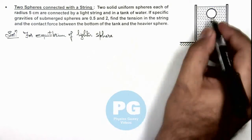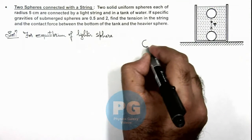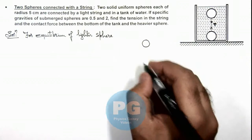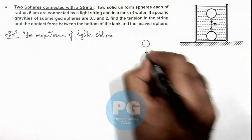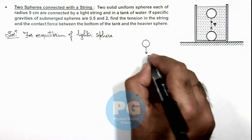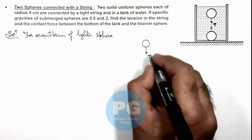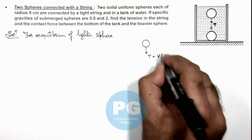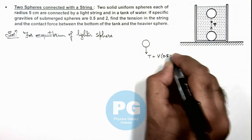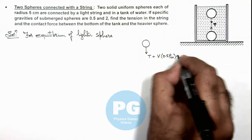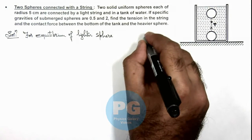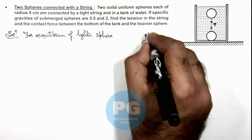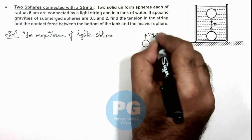Here for this lighter sphere if we just have a look on its free body diagram it'll be experiencing in downward direction a tension plus its weight we can write as its volume multiplied by the density is 0.5 times ρ of water multiplied by g. And in upward direction is the buoyant force acting on it which is V ρ water g.